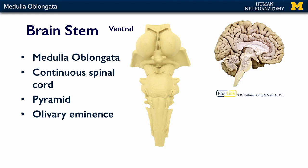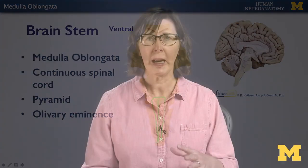The most prominent aspect of the medulla are the pyramids, and that's this kind of lump that you can see here. There's a divide down the middle, and then you can see the other side of it here and here. We talked about the pyramids when we talked about the motor system and how the motor fibers, as they're traveling through the medulla, come down toward that ventral surface and form these pyramids, and you can actually see them from the surface.